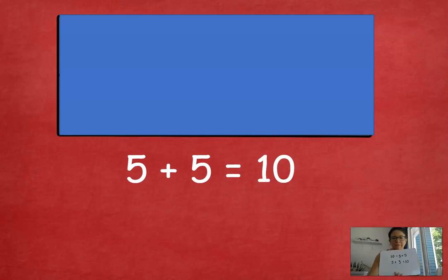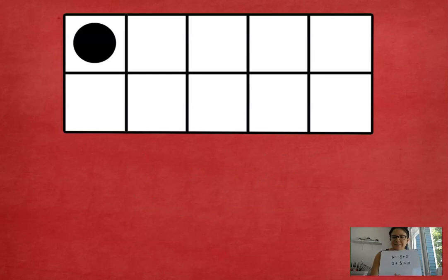I wrote subtraction instead of addition. Ready? Here we go. I saw 5 dots in our 10 frame. We need 5 more to make 10. 5 plus 5 is 10, 10 minus 5 is 5. Here we go. I'm going to erase it in 3, 2, 1. One addition, one subtraction sentence.